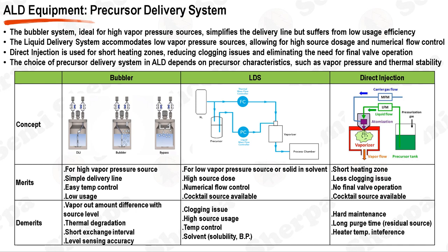For precursors with low vapor pressure or those that are solid or in solvent, the liquid delivery system, LDS, is often the preferred choice. This system allows for high source dosage and numerical flow control, and it can accommodate cocktail sources. However, it may face issues such as clogging, and it requires careful temperature control. Additionally, the choice of solvent, particularly its solubility and boiling point, can affect the delivery performance.